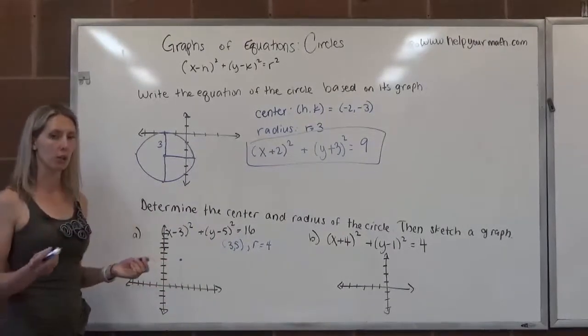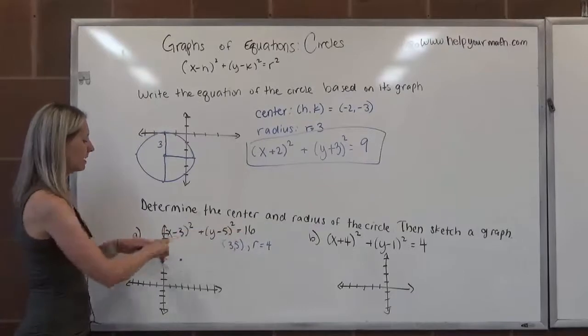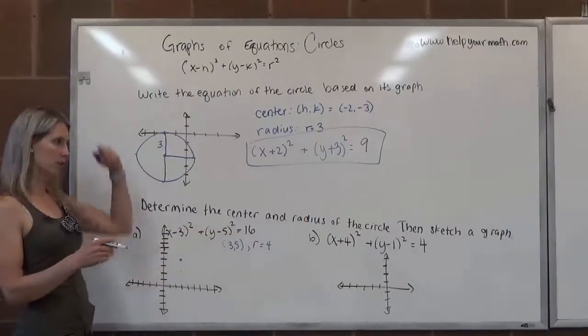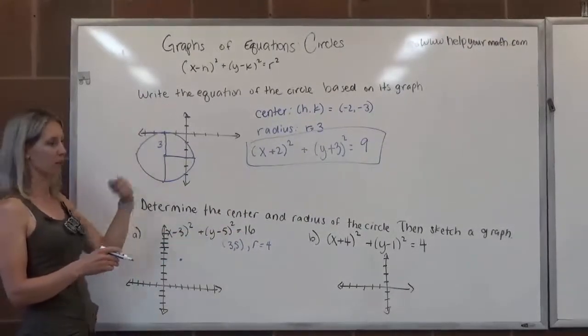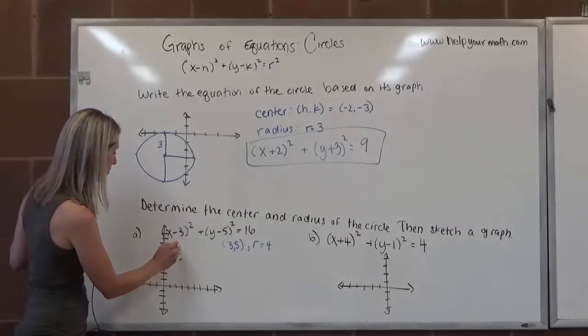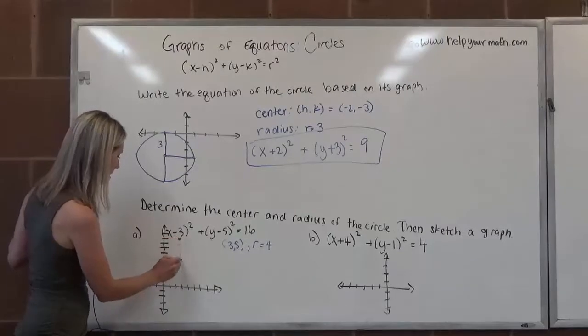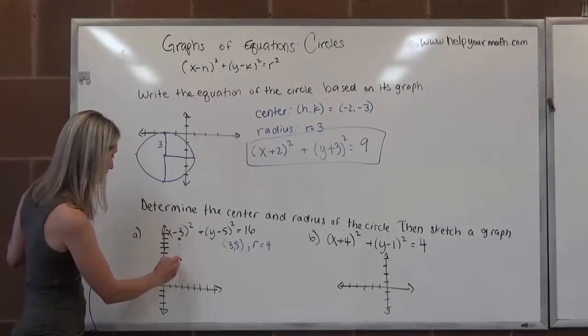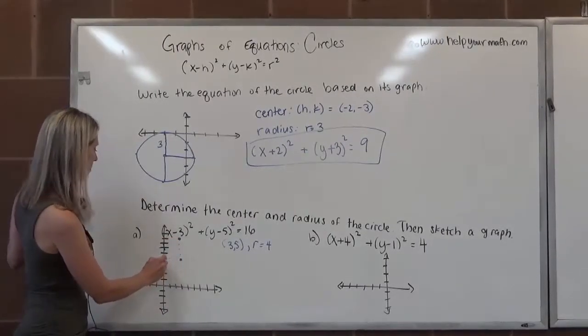My suggestion for drawing a circle is go the radius in the four directions. Go straight up the radius length, go straight down the radius length, and then left and right. So here we go up, 1, 2, 3, 4. Here I'm going to go to the left, 1, 2, 3, 4.